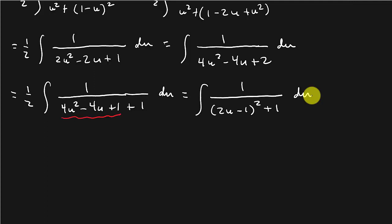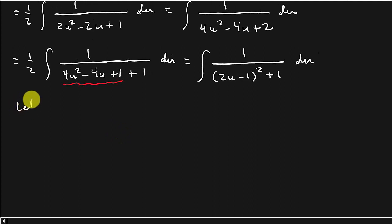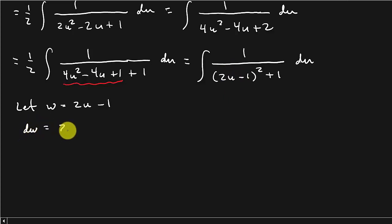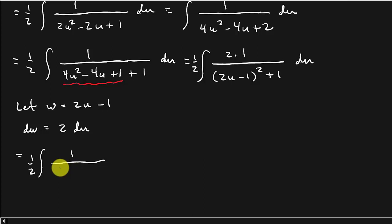Now I can make another substitution. Let w equal 2u minus 1, so dw equals 2 du. Just like before, I need a factor of 2 du, so I multiply inside by 2 and put one half out front. After substitution, this becomes one half times the integral of 1 over w squared plus 1, dw.